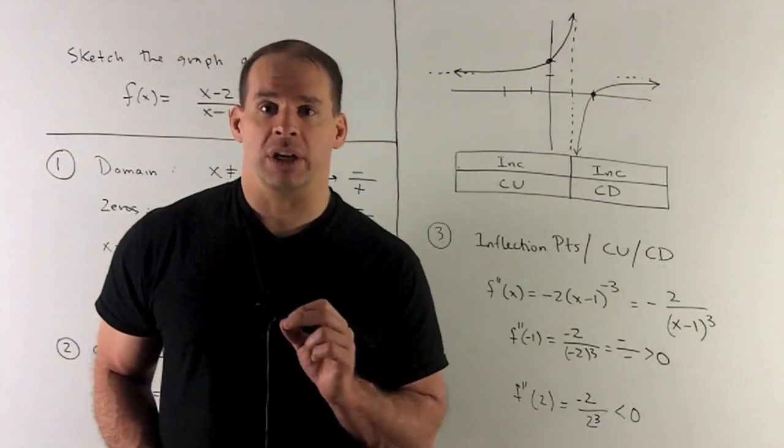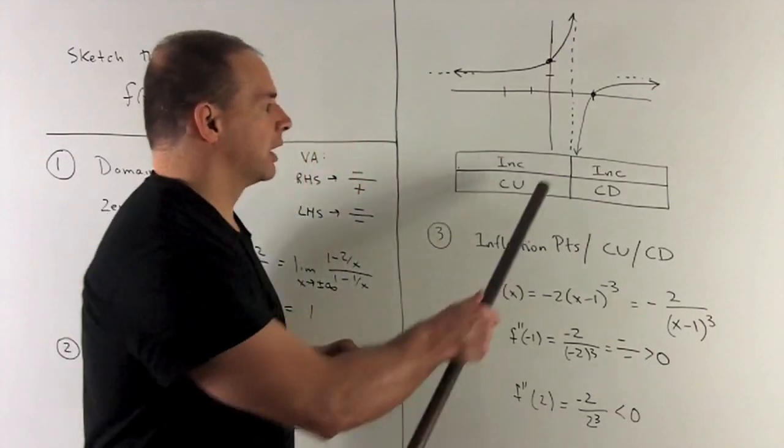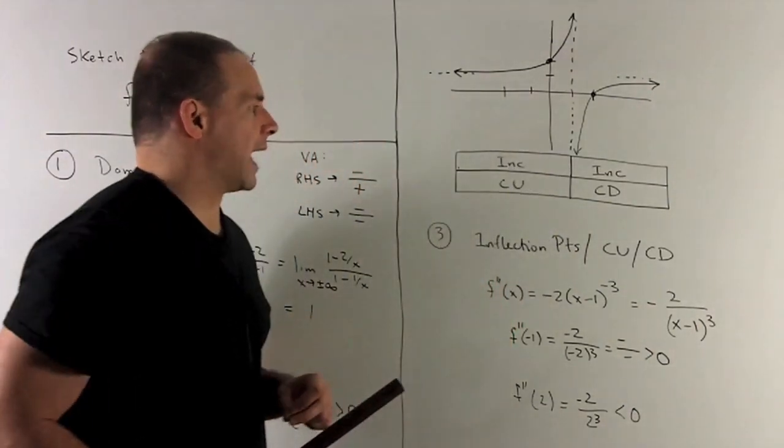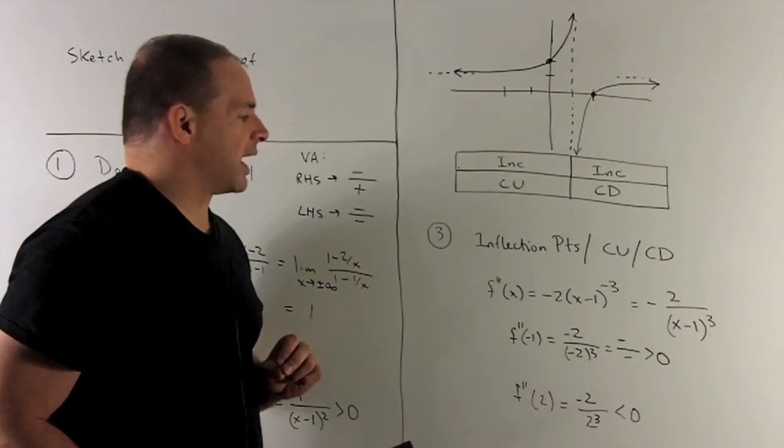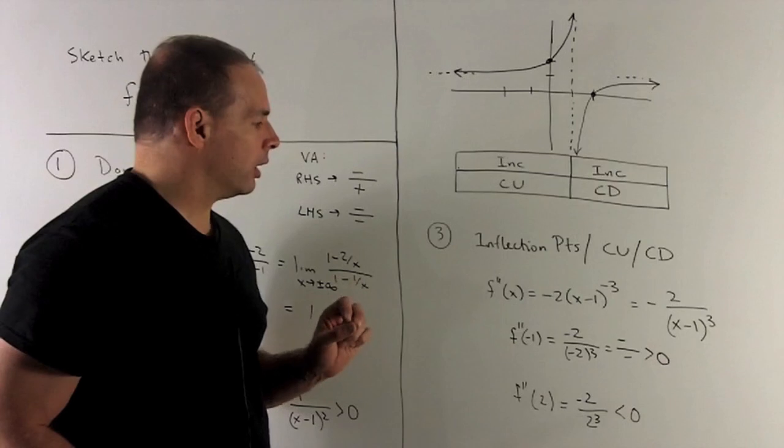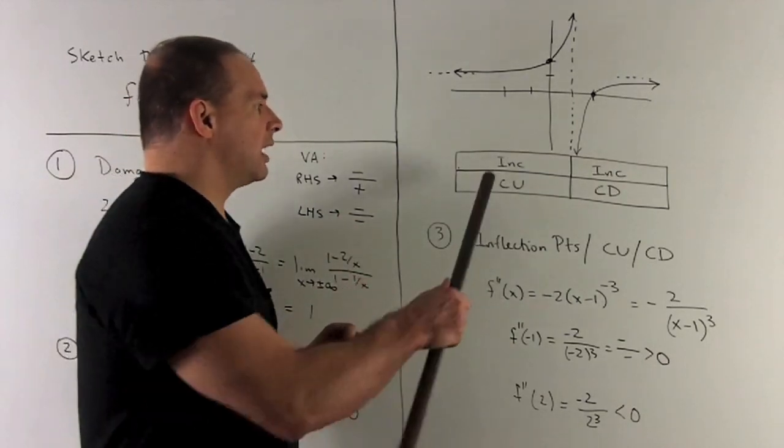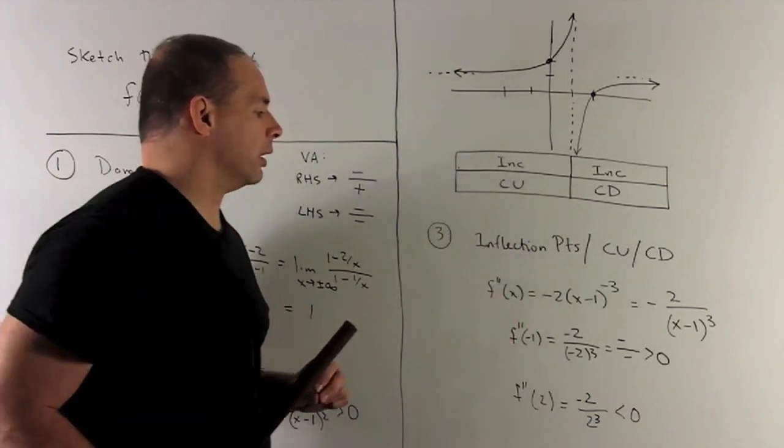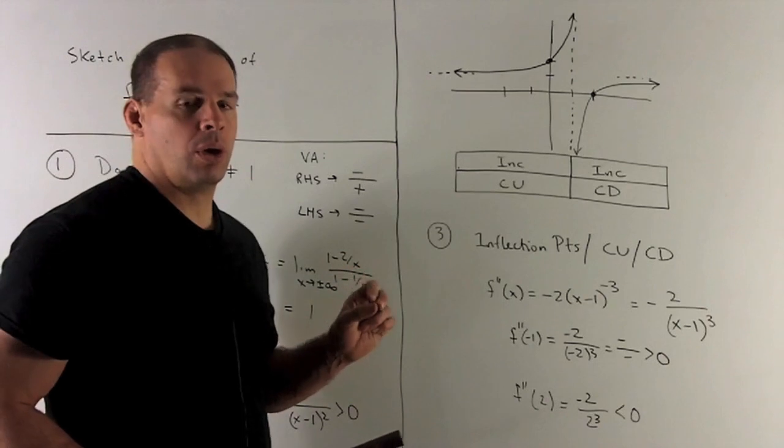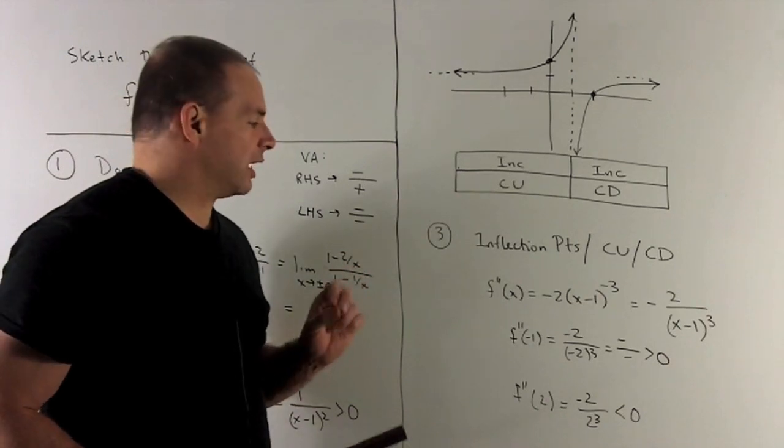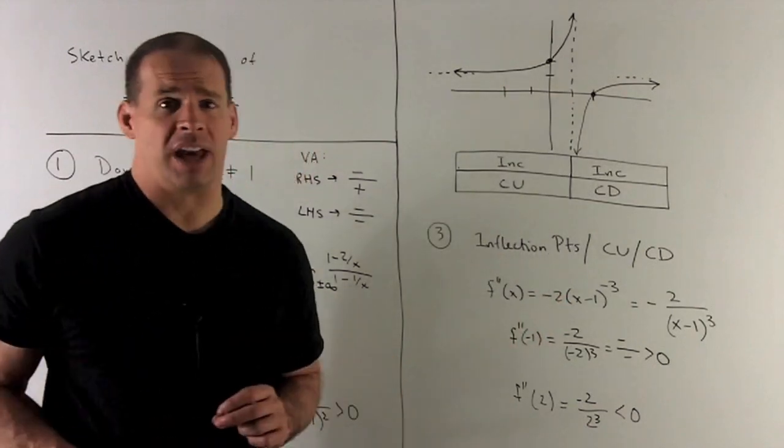I'll check a point on each region. Let's go with minus 1 and 2. We're still split at the vertical asymptote there. Minus 1 goes in, so what comes out? I have -2/(-8). So it's negative over negative, which is positive. So we're concave up on this side of 1. I put a 2 in there. That gives me -2/8, so that's going to give me a negative number, so concave down on that side of x equals 1.